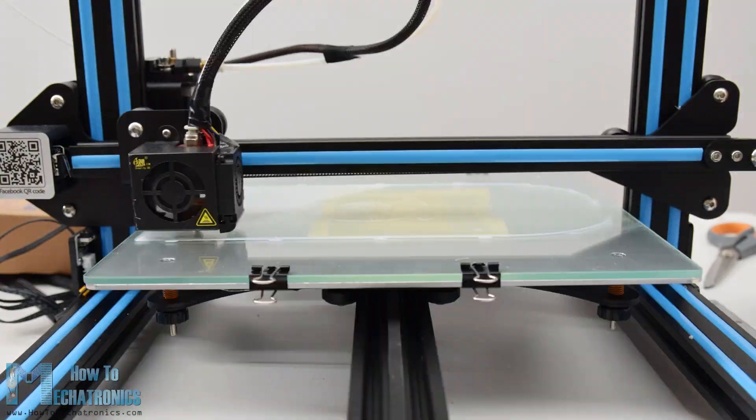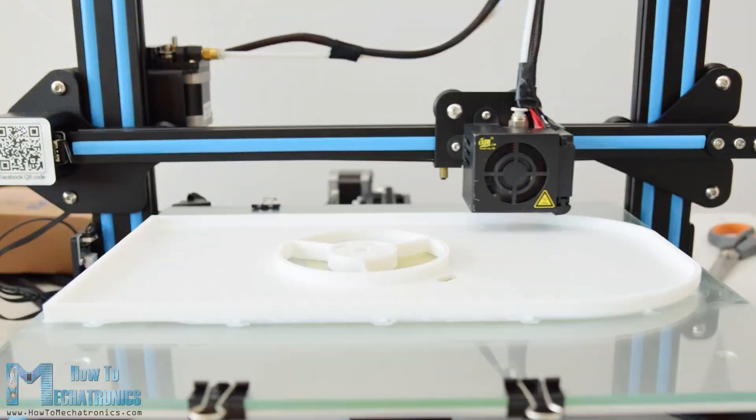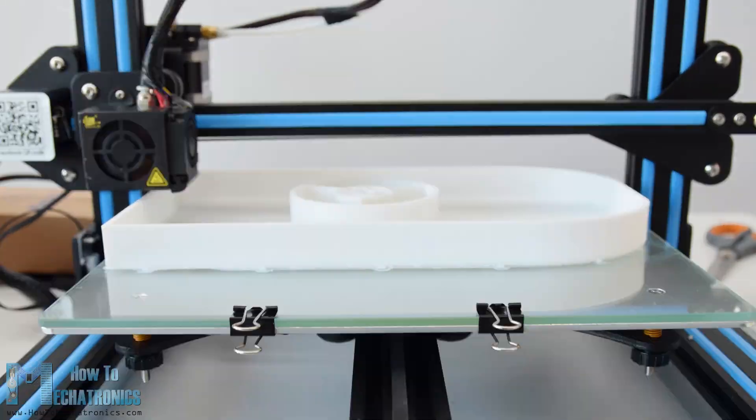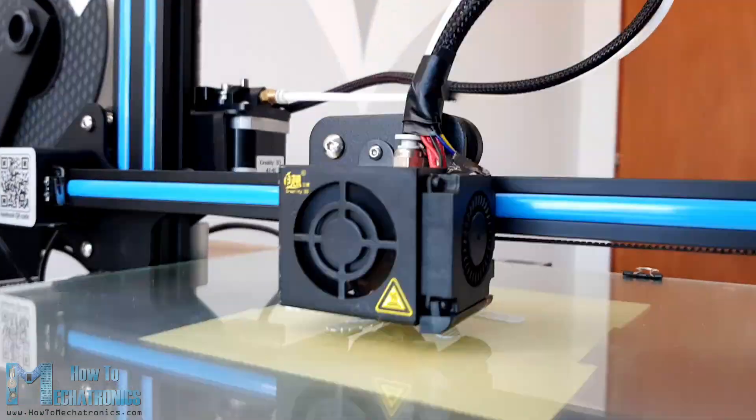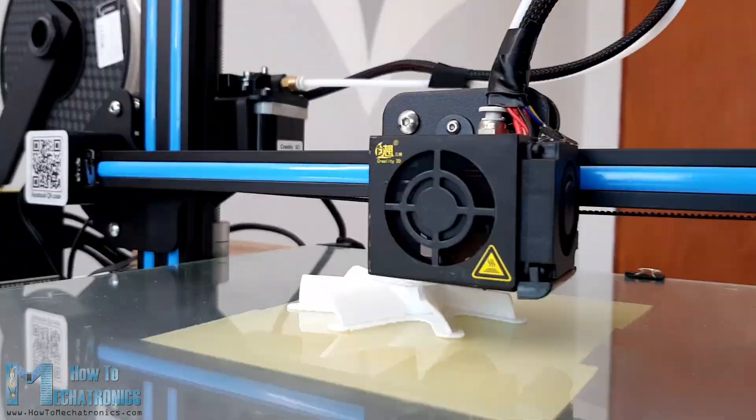The hull of the hovercraft is the biggest part to print, and I specifically designed it to fit my Creality CR10 3D printer, which has a printing bed of 30x30cm. There is also a link to this 3D printer in the description of the video, in case you want to check it out.